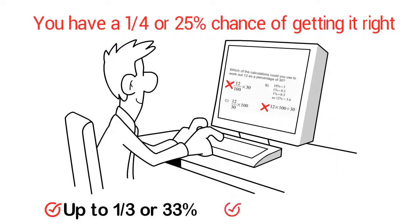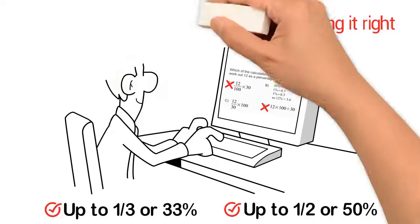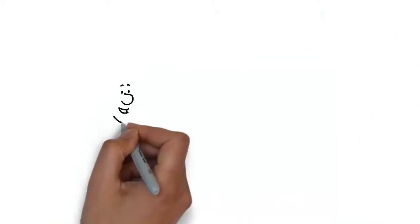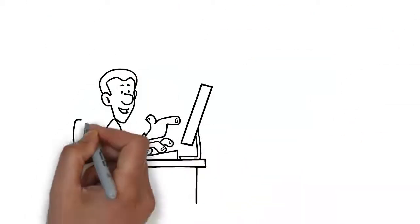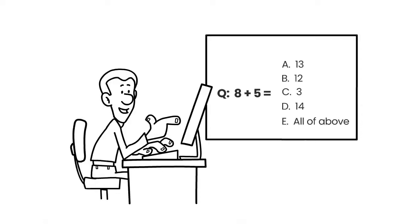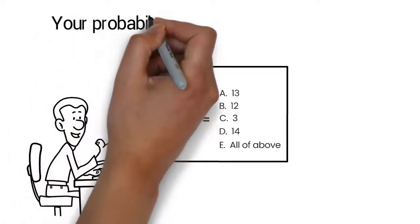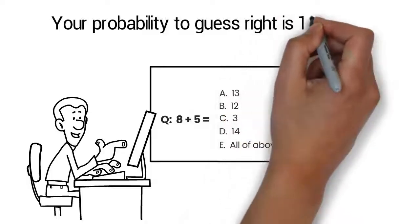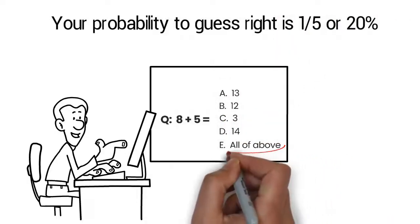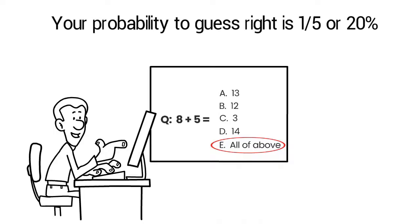Now check out this other example. Suppose you get a multiple-choice answer with five options. When you're starting out, this means your probability to guess right is 1 out of 5 or 20%. Now on this question, one of the answers is all of the above.